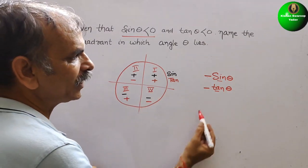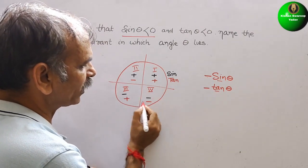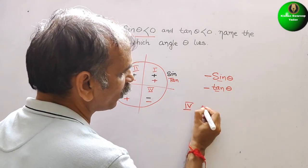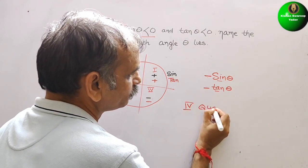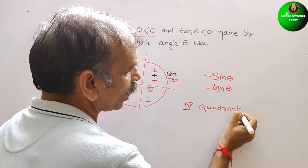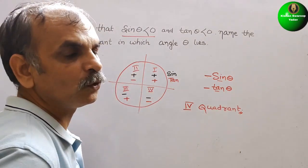So now you can see both negatives lie in fourth quadrant only. So we will write here fourth quadrant. So now we can say theta lies in fourth quadrant.